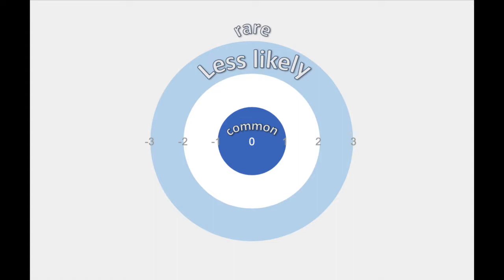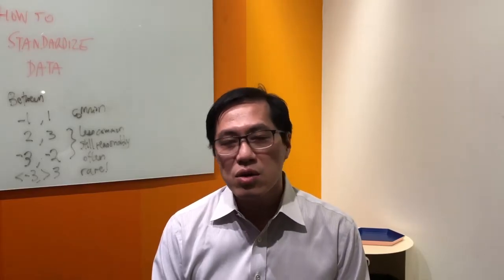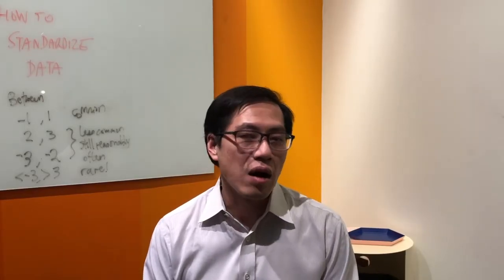Now about 30% of the time, the standard scores will fall between two and three if we ignore the sign. These values are less common, but they still occur reasonably often in nature.